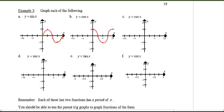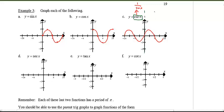Cosecant is a bit more interesting — cosecant equals 1 over sine(x). I'll draw sine first over two periods, then draw cosecant on top. Since cosecant is the reciprocal of sine, wherever sine equals 0, the reciprocal is 1/0 — undefined — so we get vertical asymptotes at those points.